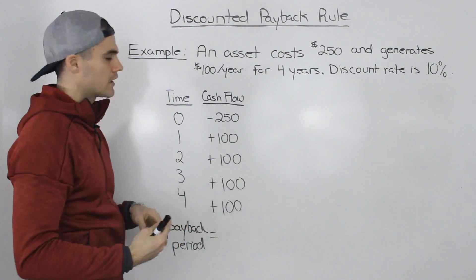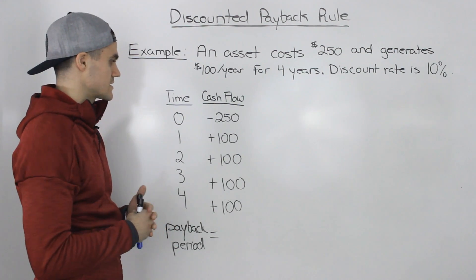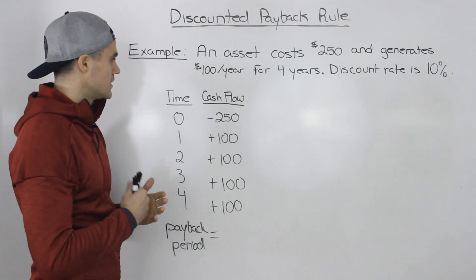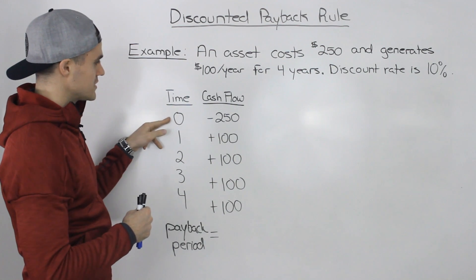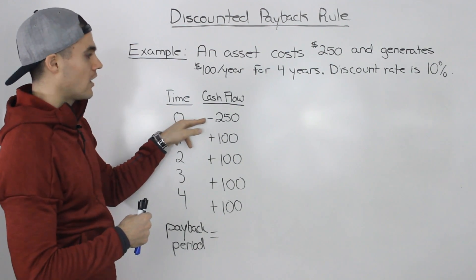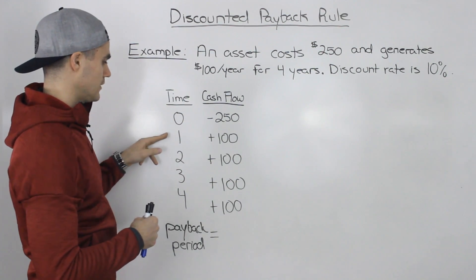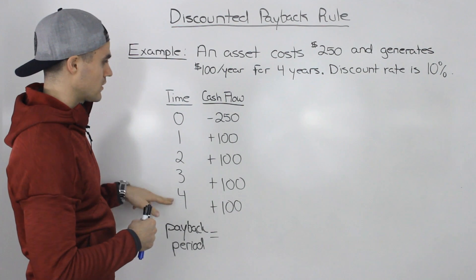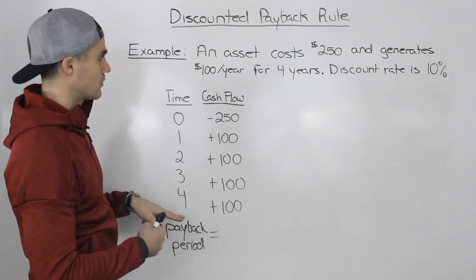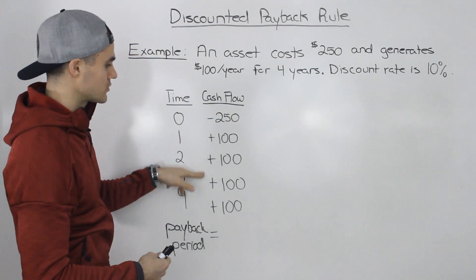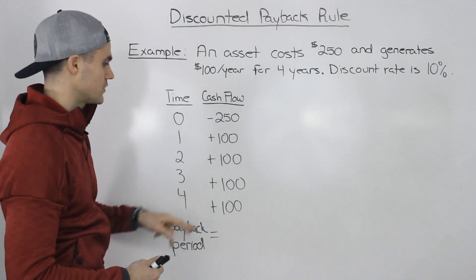Let's show these cash flows in a chart — usually we've been doing it in a timeline, but let's switch it up. So we have the time zero cash flow of negative $250, and then in years one, two, three, and four, we're going to generate $100 per year — those are going to be positive cash flows.